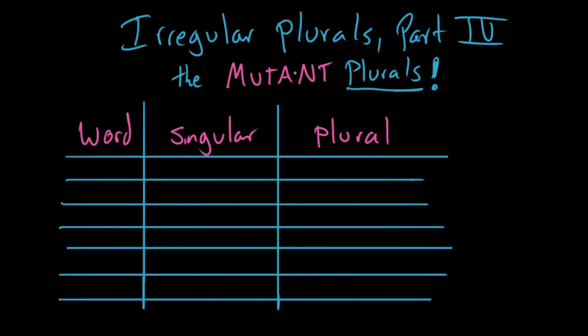What way? I'll explain by writing all of them down. The words are foot, woman, man, tooth, goose, mouse, louse.